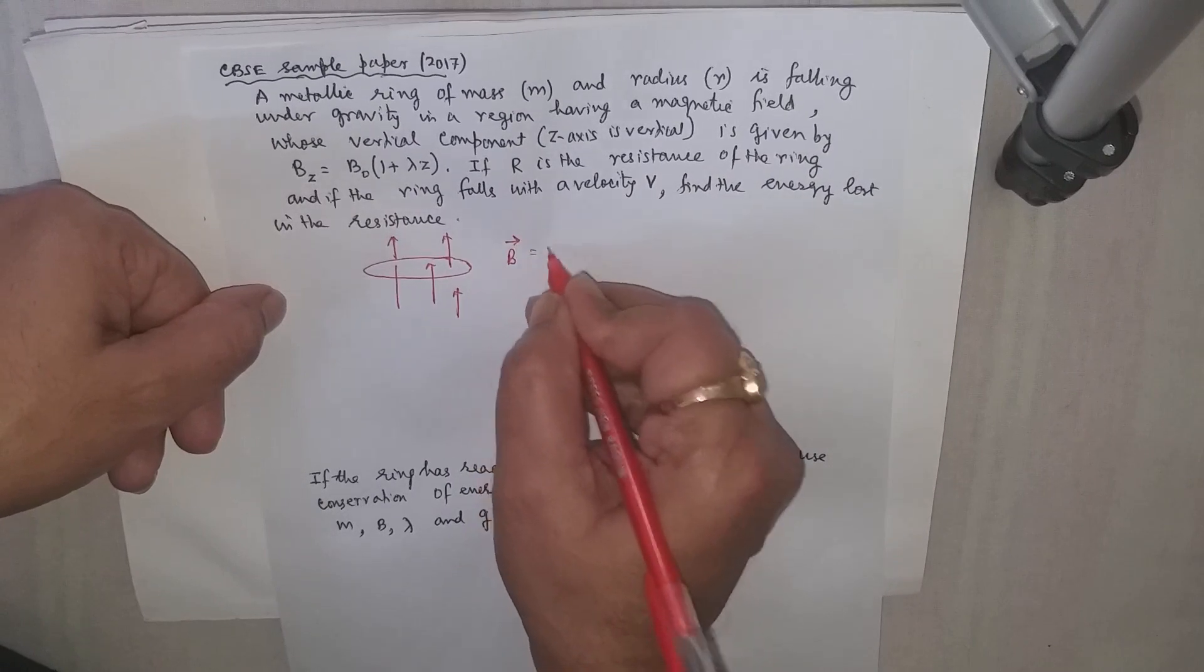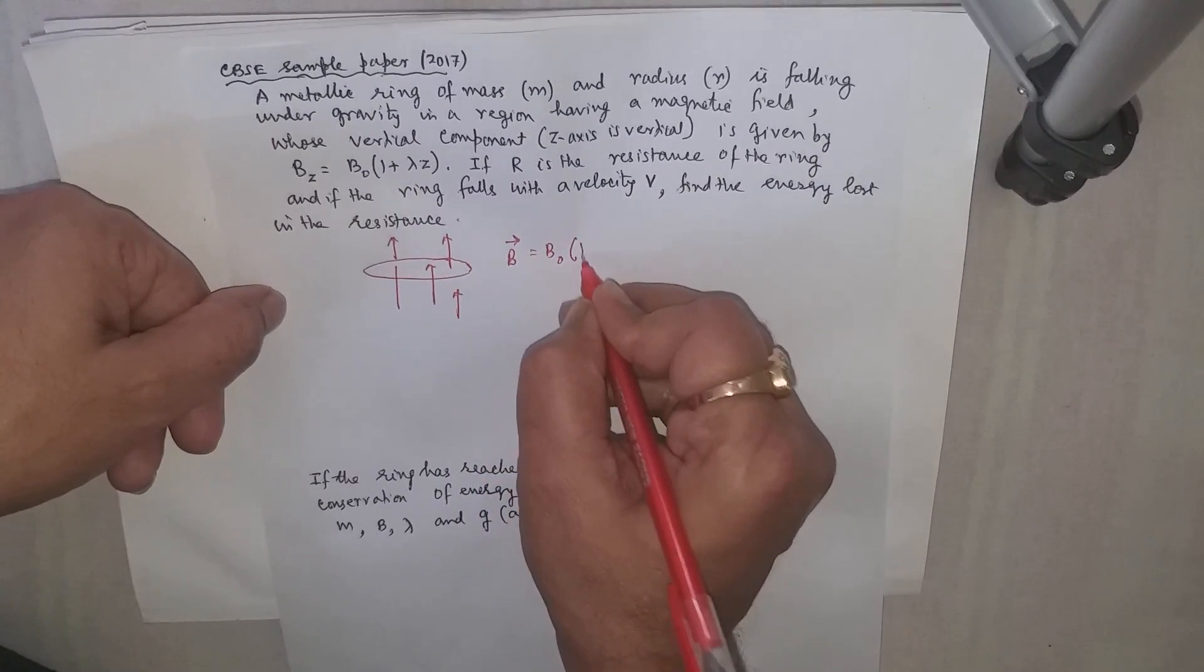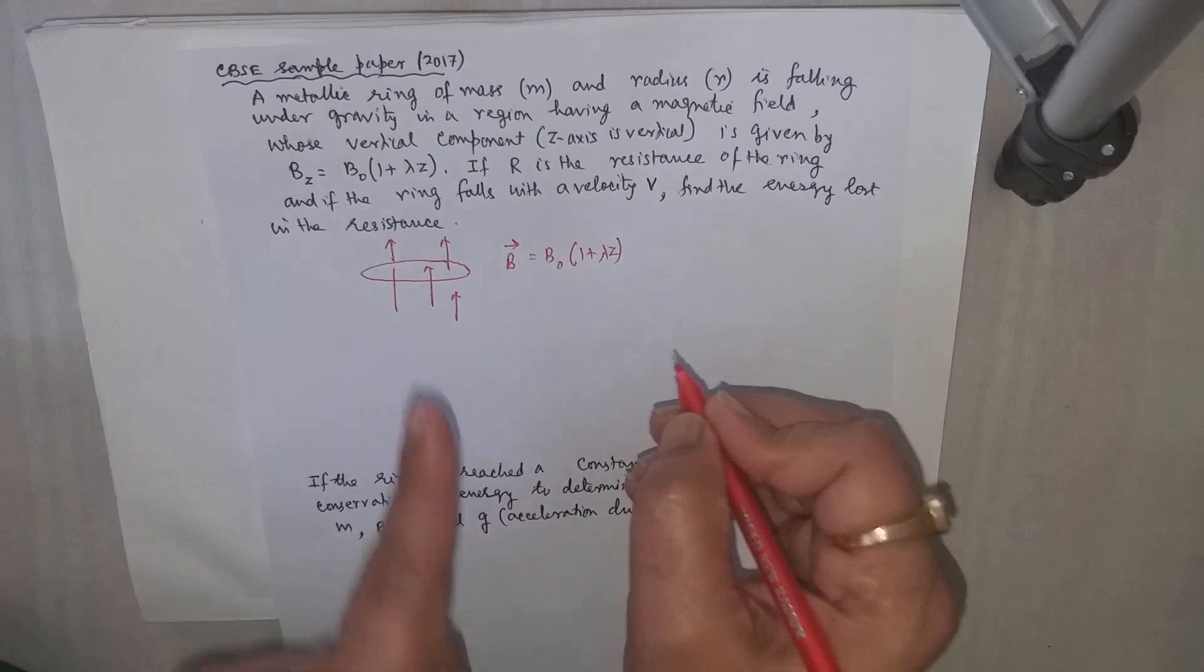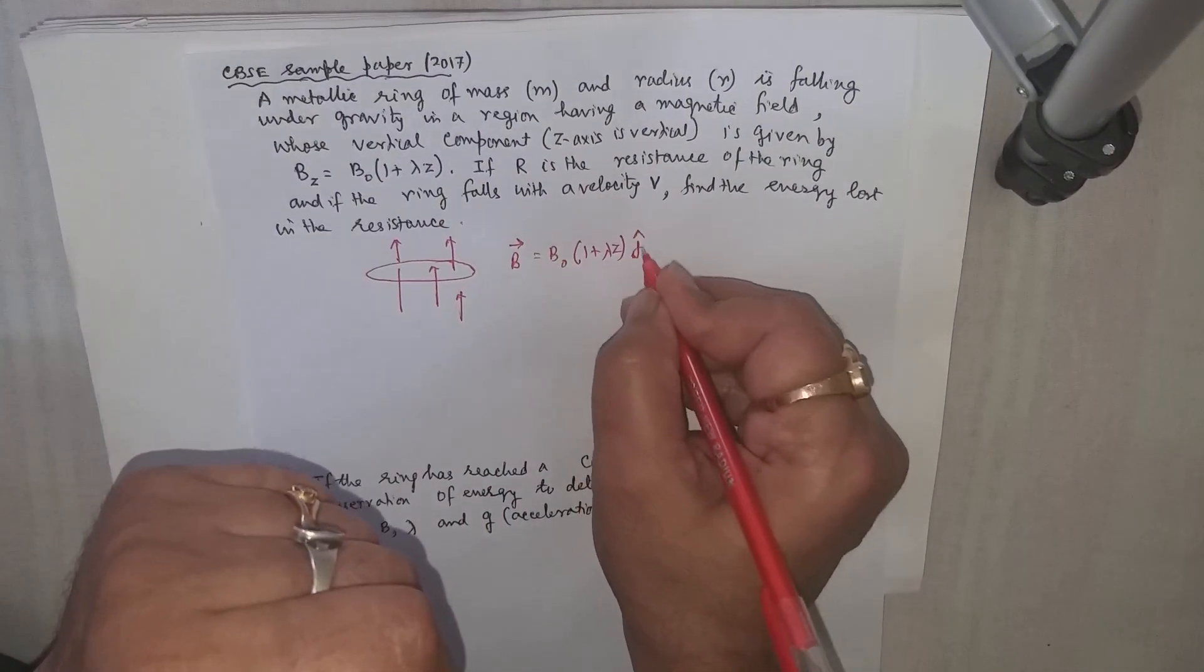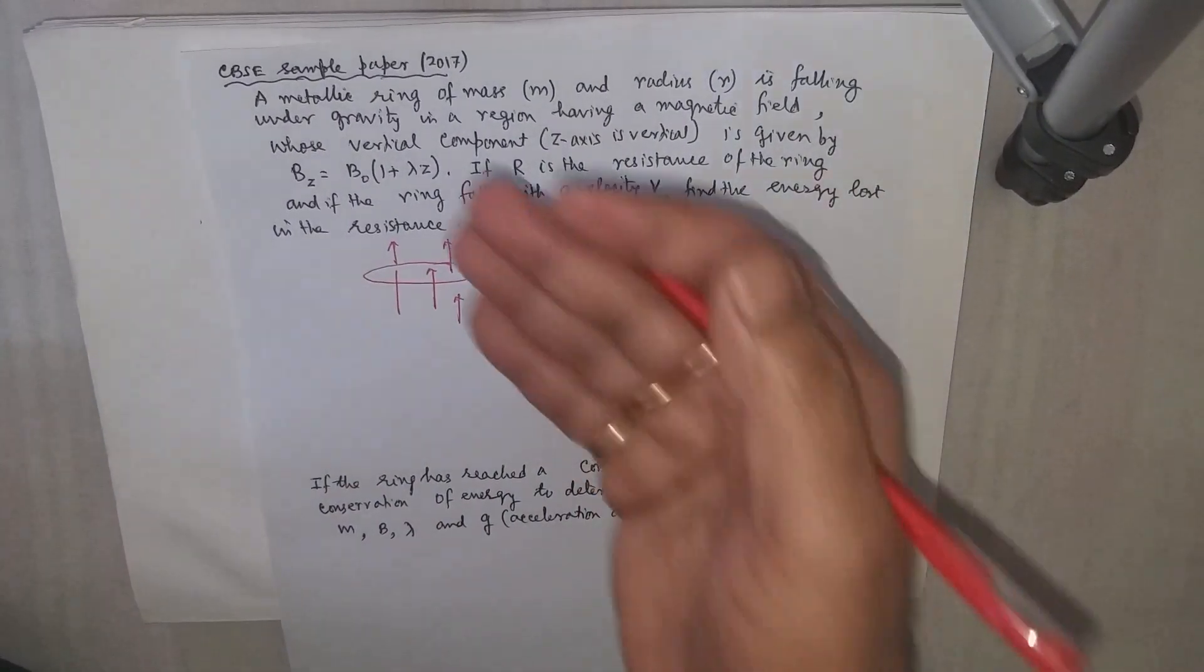The magnetic field is given as B₀(1 + λz) in the z direction. We can take it as unit vector j and it is falling down.